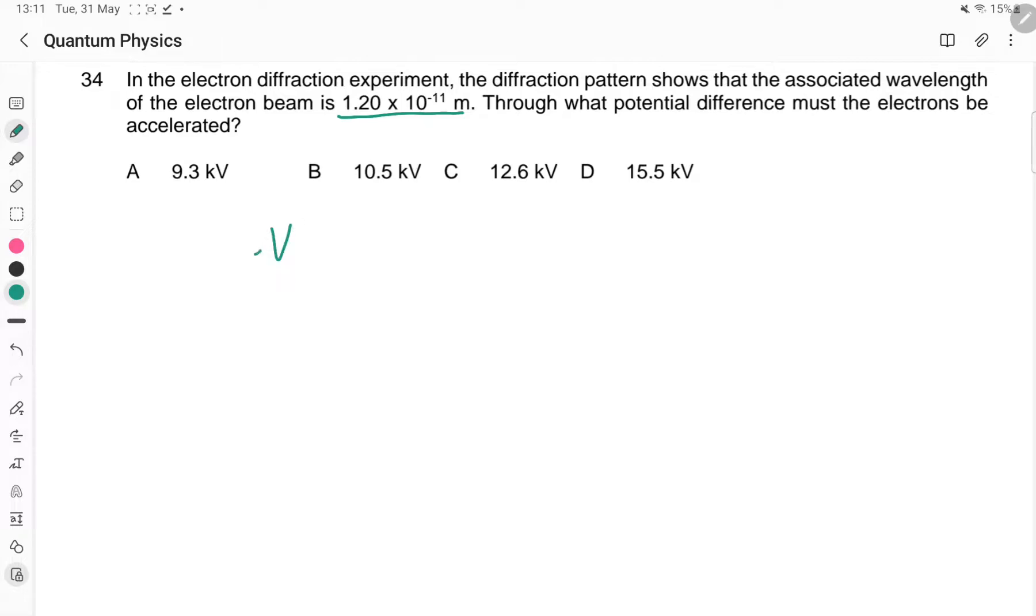The potential difference is used to accelerate the electrons and give them kinetic energy. So eV equals the KE, and this KE is equal to P squared upon 2M.